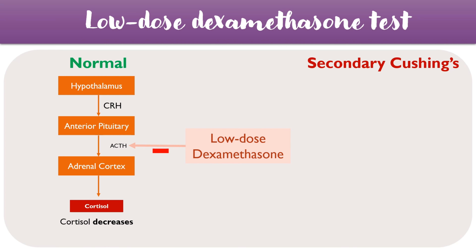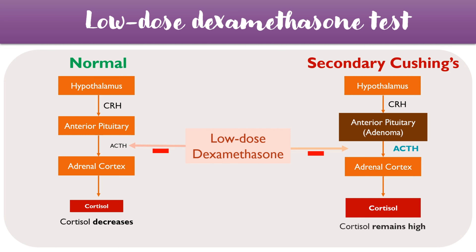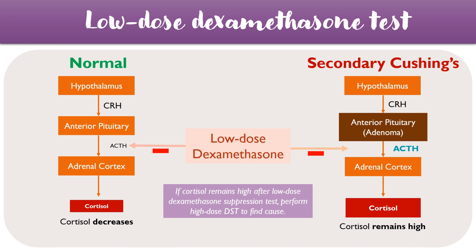Comparing this with secondary Cushing's syndrome, here we have a problem with the anterior pituitary gland, such as a pituitary adenoma. There's quite a lot of ACTH being produced. So when we give low-dose dexamethasone in this case, the high level of ACTH goes down slightly, and cortisol also goes down a bit, but it remains high compared with normal values, because the level of ACTH was already so high to begin with. The low-dose test therefore helps to confirm a Cushing's syndrome being present, but we have to perform the high-dose test to actually find the cause.